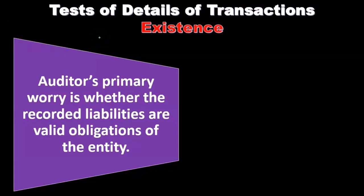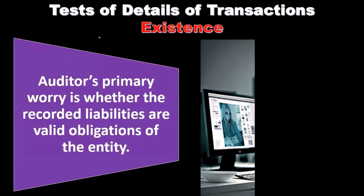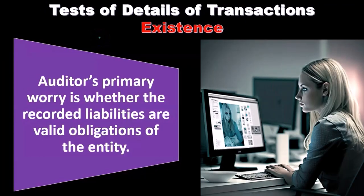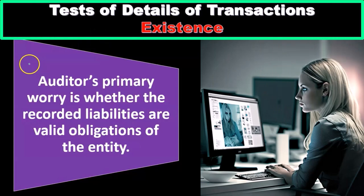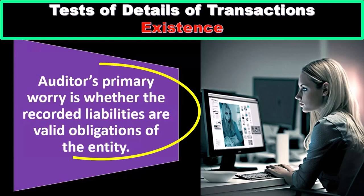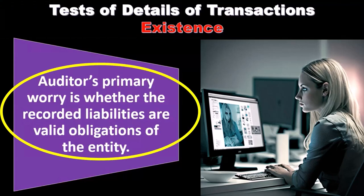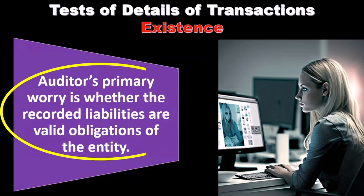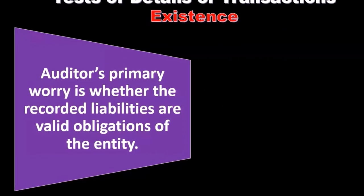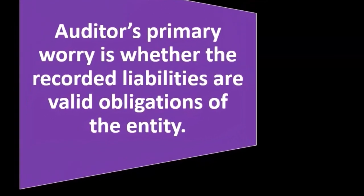The next assertion related to test of details of transactions is existence. With existence, the auditor's primary concern is whether the recorded liabilities are valid obligations of the entity — in other words, are the liabilities recorded on the books actually valid?